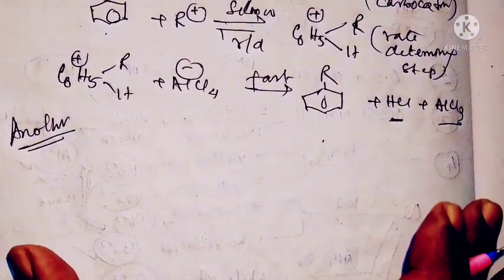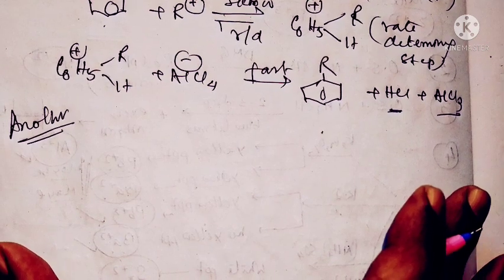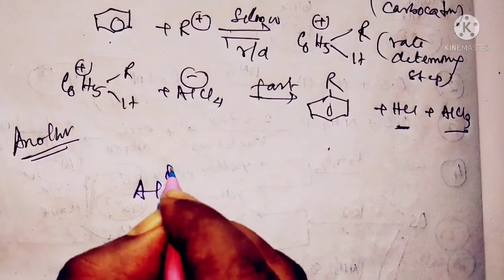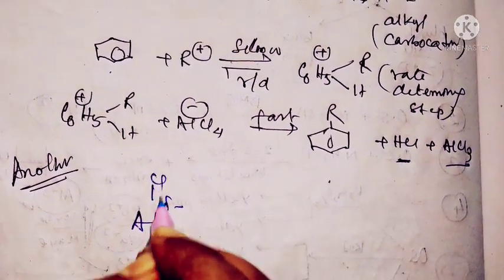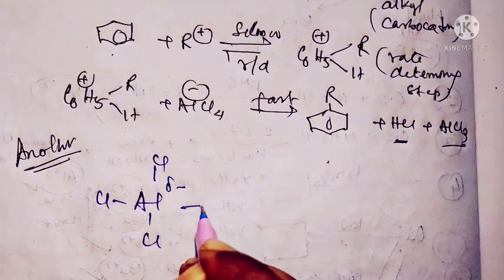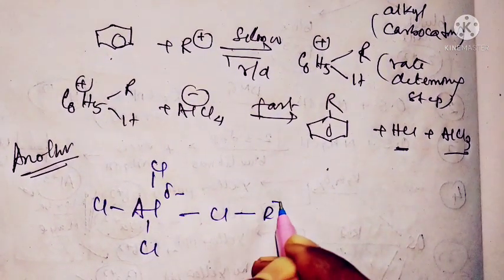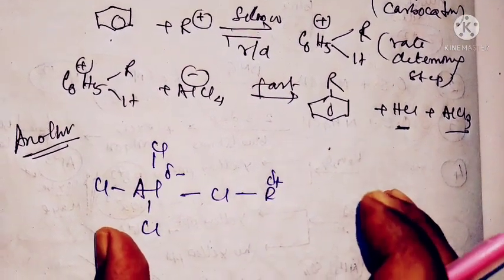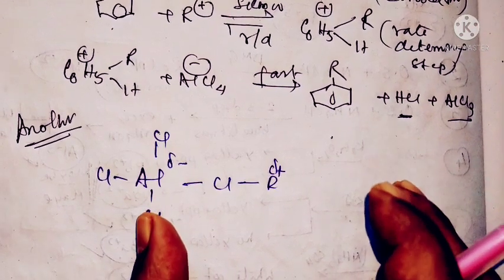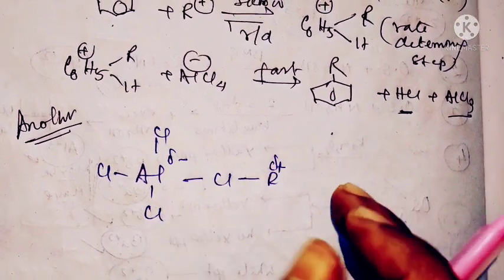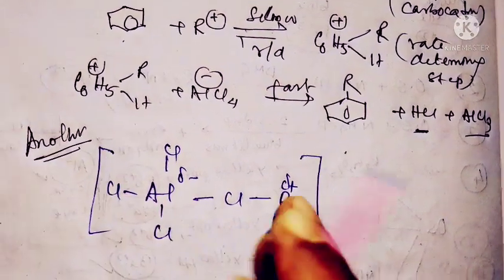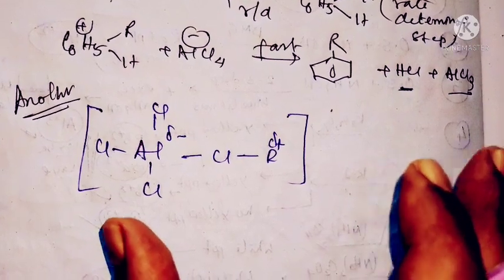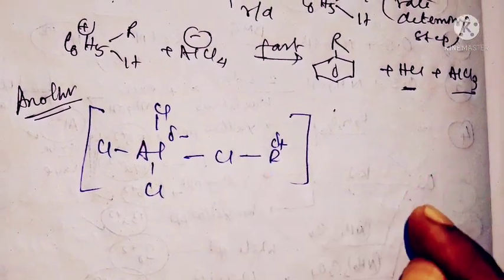Another mechanism does not consider the formation of a free alkyl carbocation or carbonium ion. Here, aluminum is delta minus, forming AlCl4 minus and R+. In this case, the electrophile is considered to be a highly polar complex molecule formed by the reaction of alkyl halide with Lewis acid AlCl3.